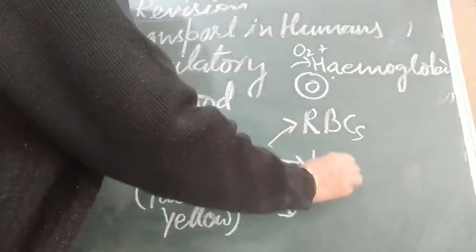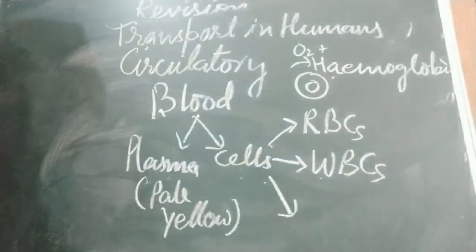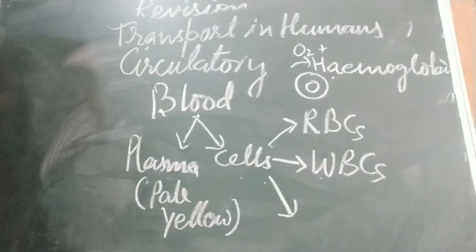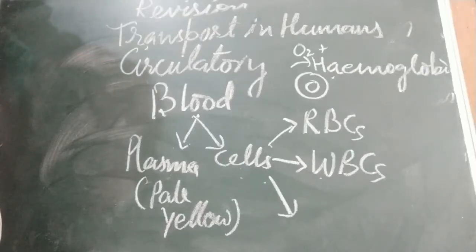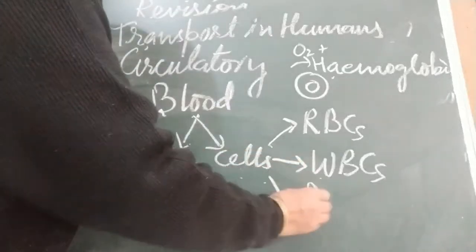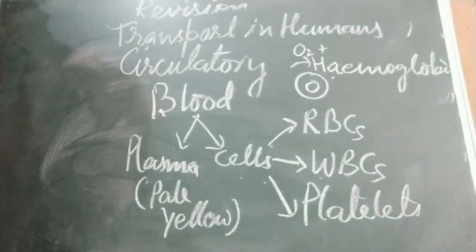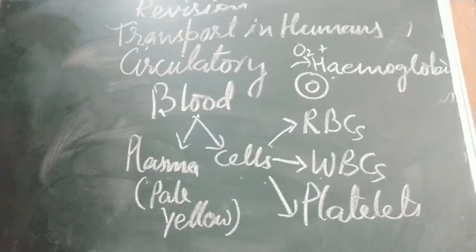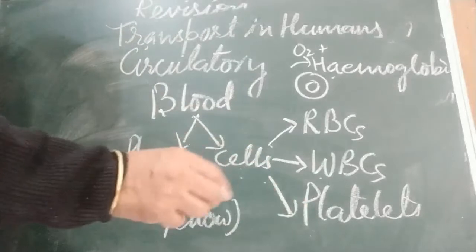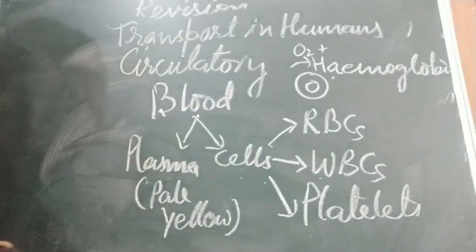Second: white blood cells, or WBCs. They are irregular in shape and larger than RBCs. They help in protecting our body from disease-causing microorganisms. Third: platelets. They are irregular in shape and help in clotting of blood. When you get a cut, after some time a blood clot forms — platelets help in clotting the blood wherever the cut is.